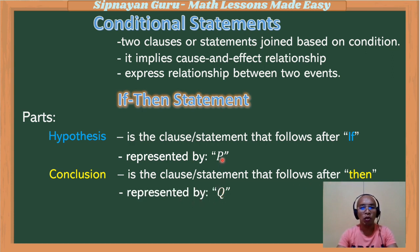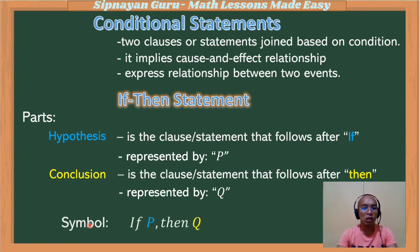Take note: P represents the hypothesis and Q represents the conclusion. If you put this into symbols, it is: if hypothesis, then conclusion — so if P, then Q.